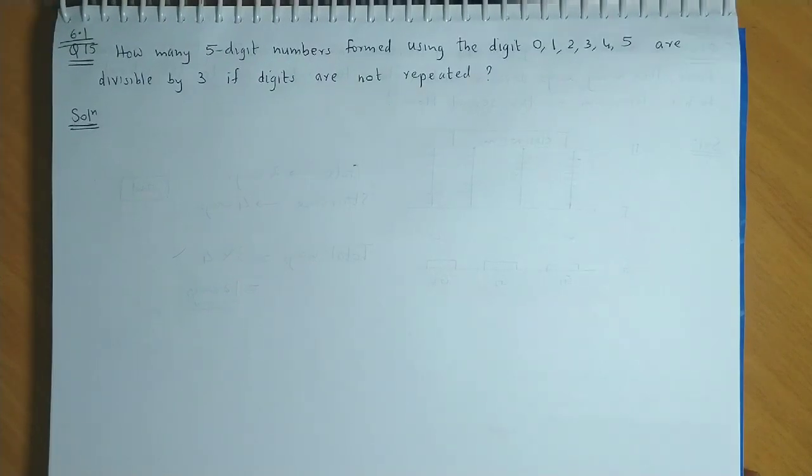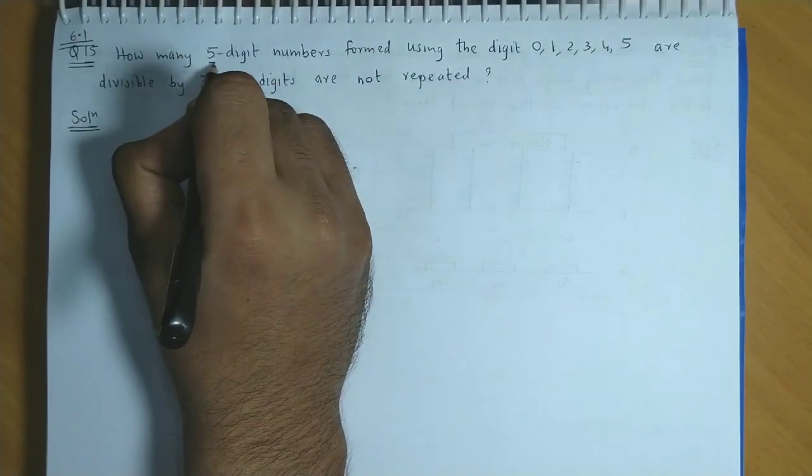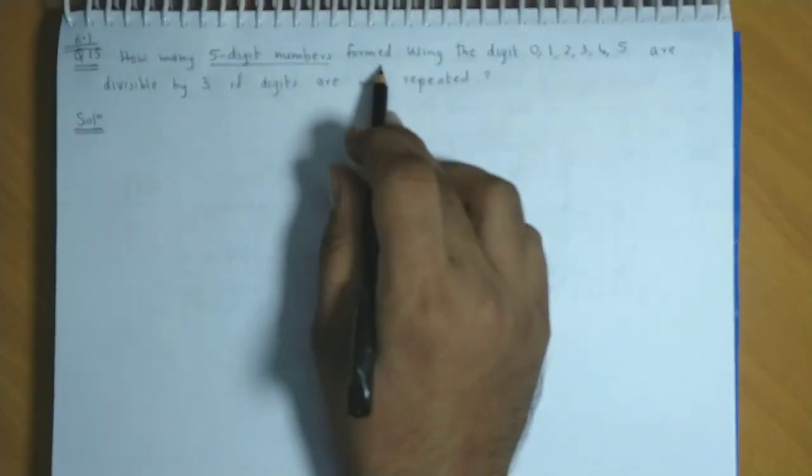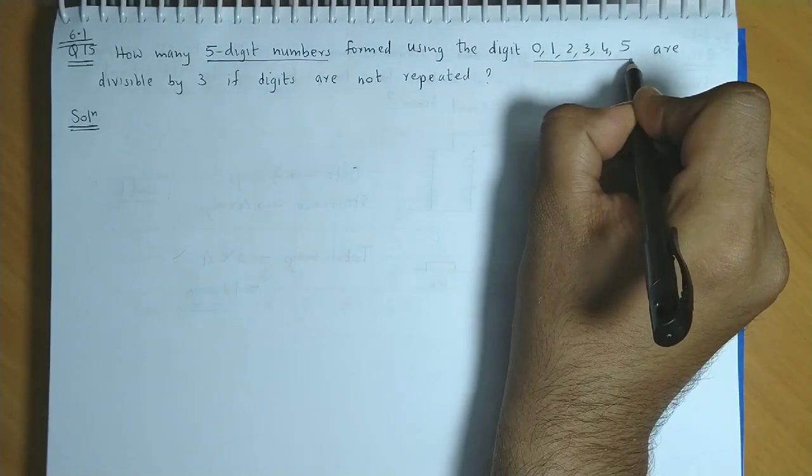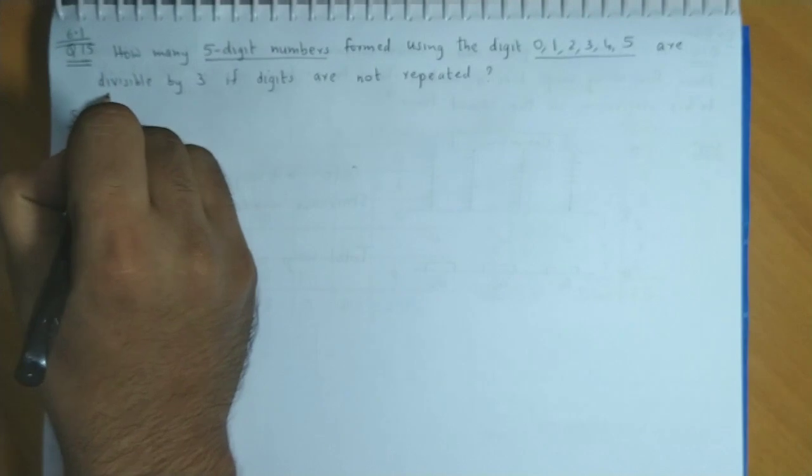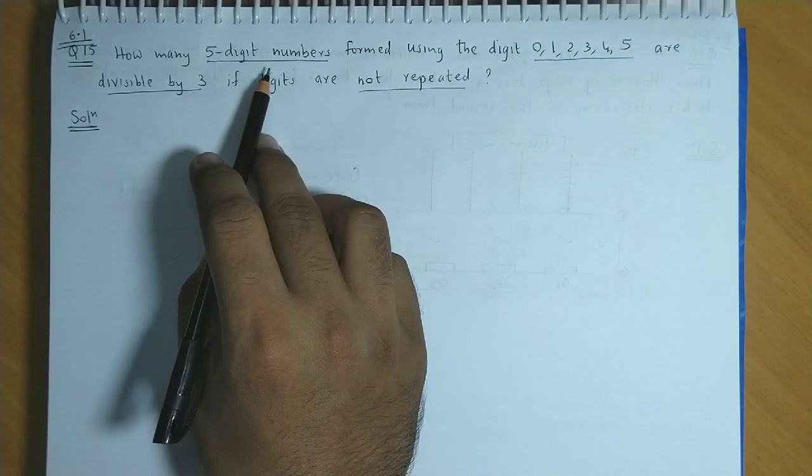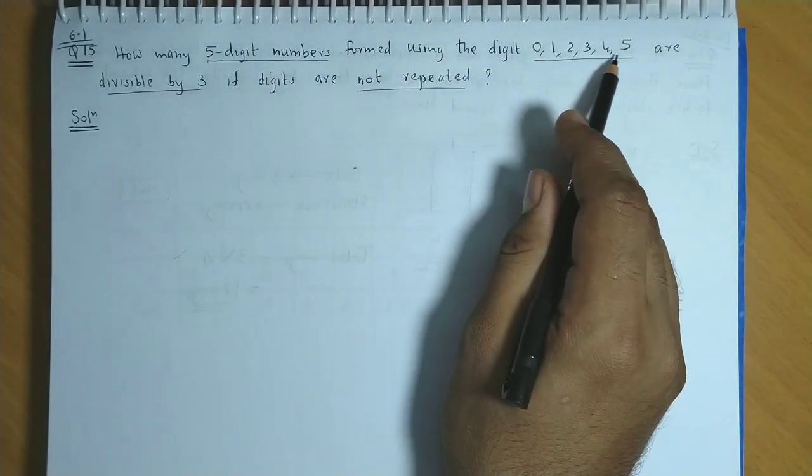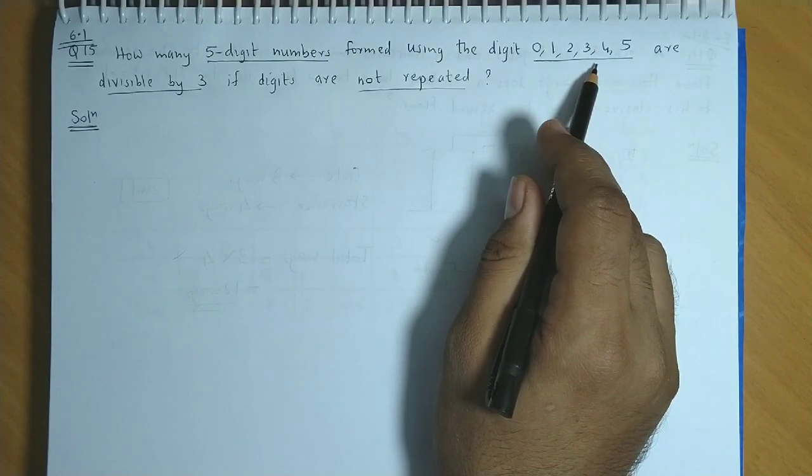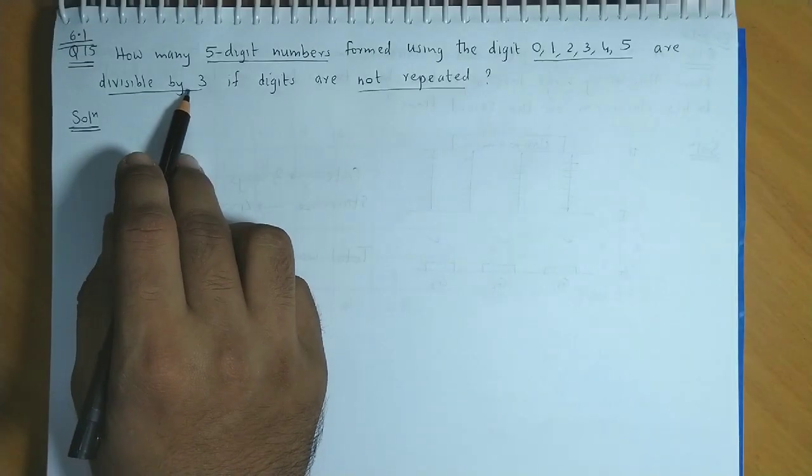Now question number 15 from exercise 6.1. How many five digit numbers formed using 0, 1, 2, 3, 4, 5 are divisible by 3 if digits are not repeated? So we have to form 5 digit numbers using digits 0, 1, 2, 3, 4, 5. And the 5 digit number should be divisible by 3.